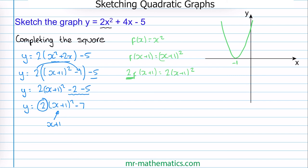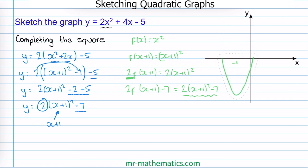So going back to our equation, now we're going to take away 7. So we have 2 lots of f of x plus 1, take away 7. Our equation becomes 2 lots of x plus 1 squared take away 7 — you can see we've built up to our equation. So we'll move our curve down by 7 units. Our turning point has a y value of negative 7, giving us the coordinates of negative 1, negative 7.